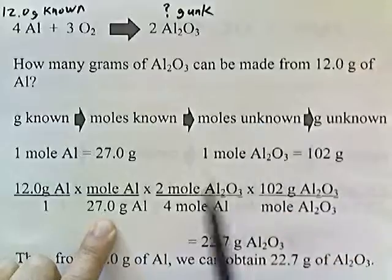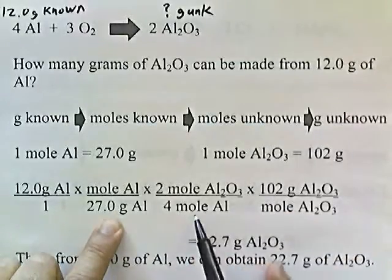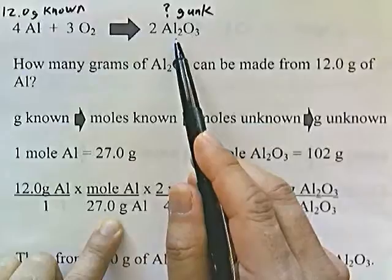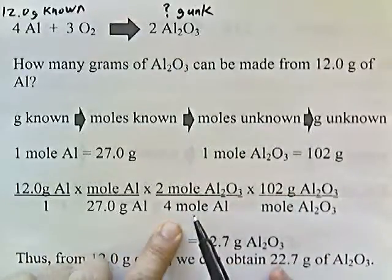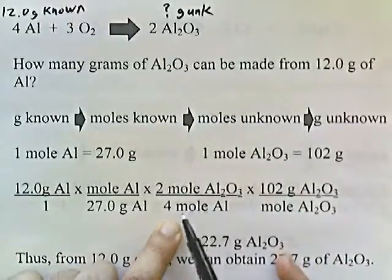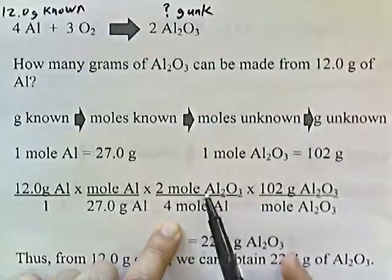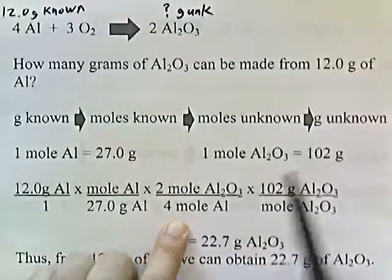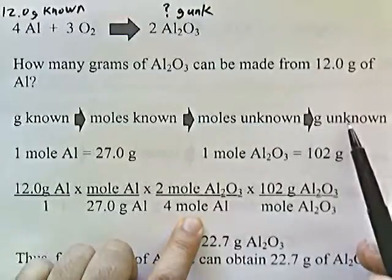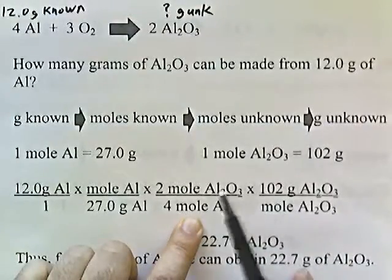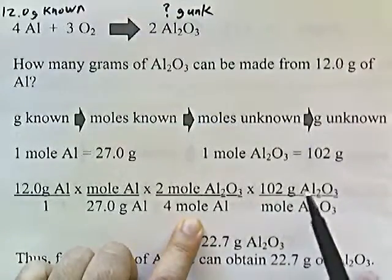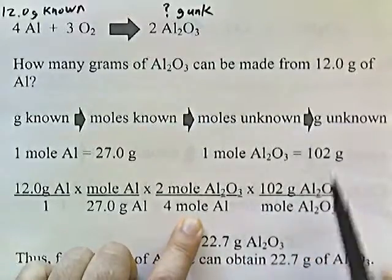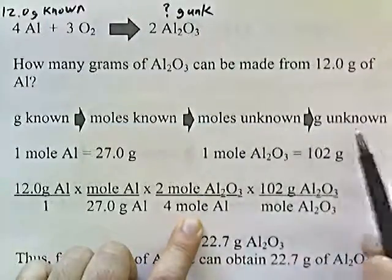Now I want to go from moles of known to moles of unknown. I have moles of aluminum on top, so I put moles of aluminum on the bottom. Four moles of aluminum will give two moles of aluminum oxide, so I put four moles of aluminum on the bottom and two moles of aluminum oxide on top. The moles of aluminum cancel, leaving moles of aluminum oxide. Now I go from moles of unknown to grams of unknown: moles of aluminum oxide on the bottom, and 102 grams of aluminum oxide on top.